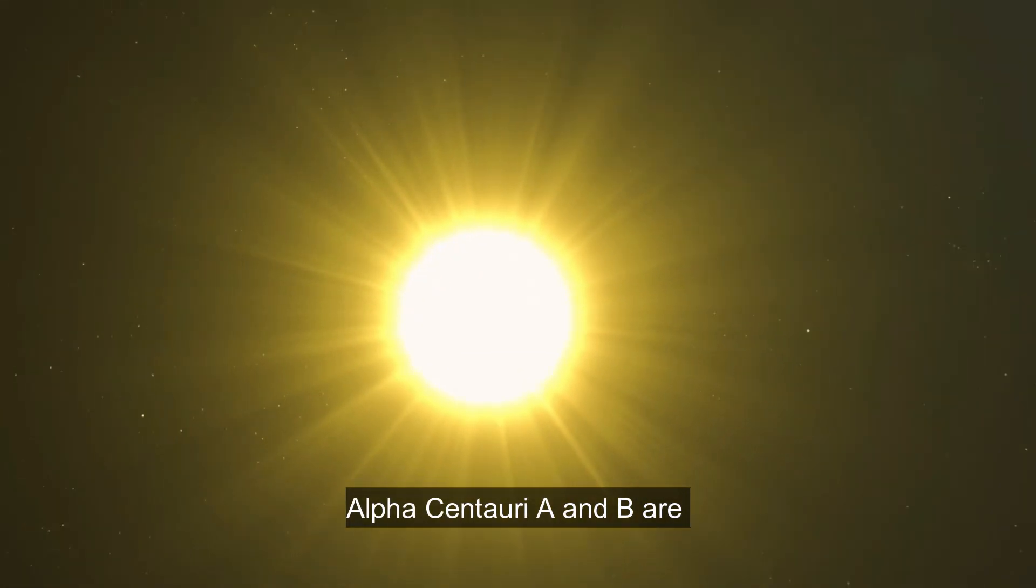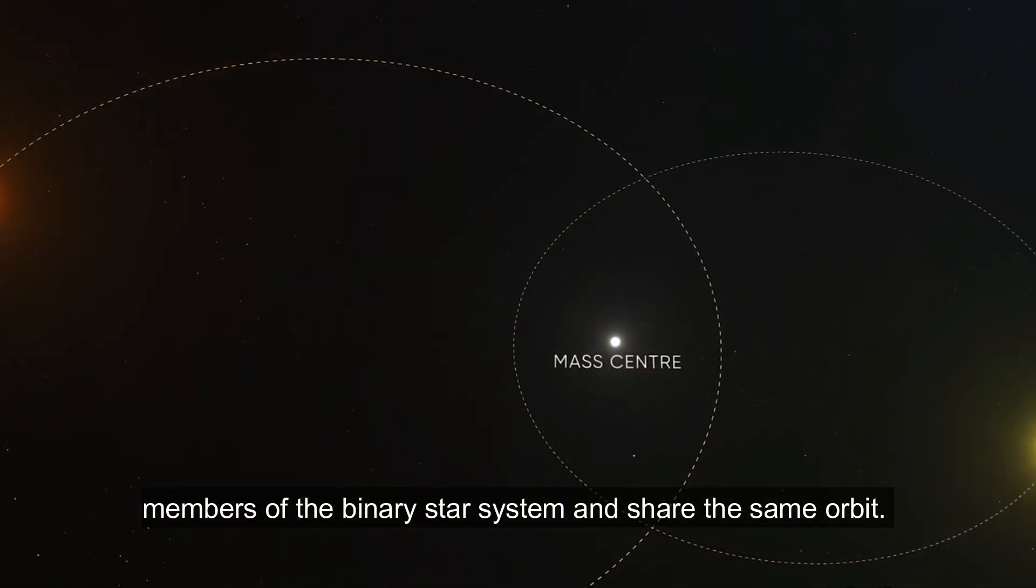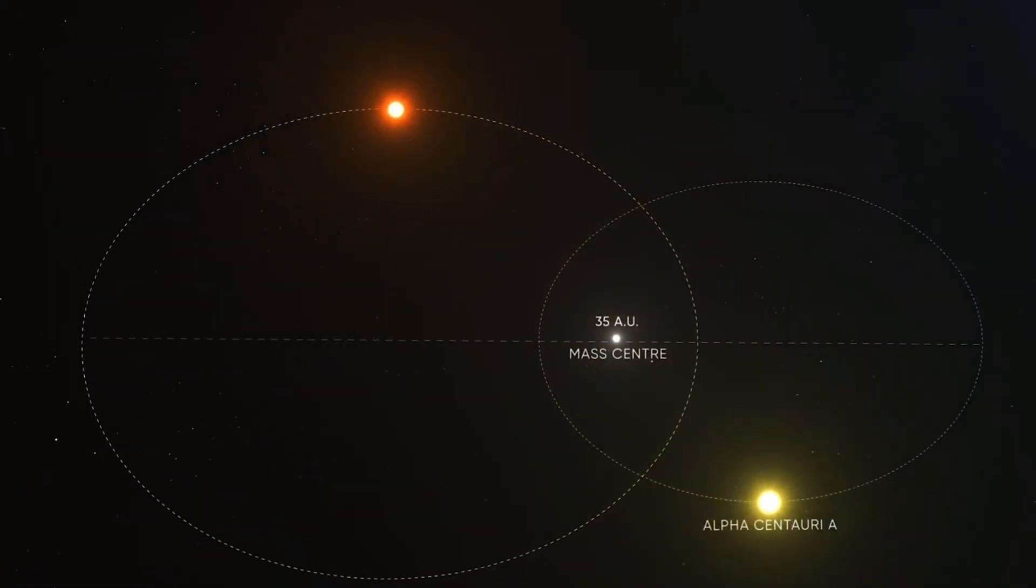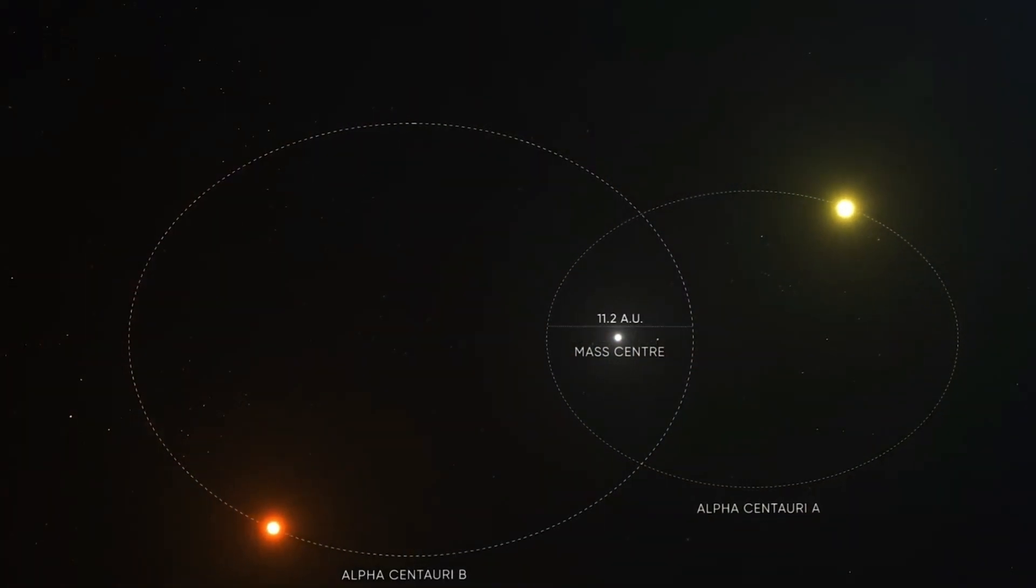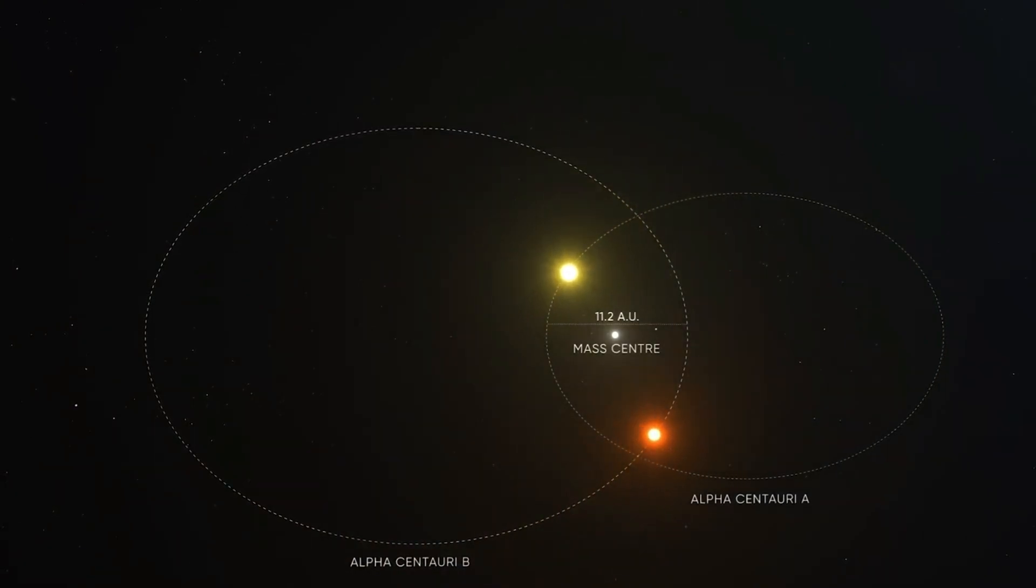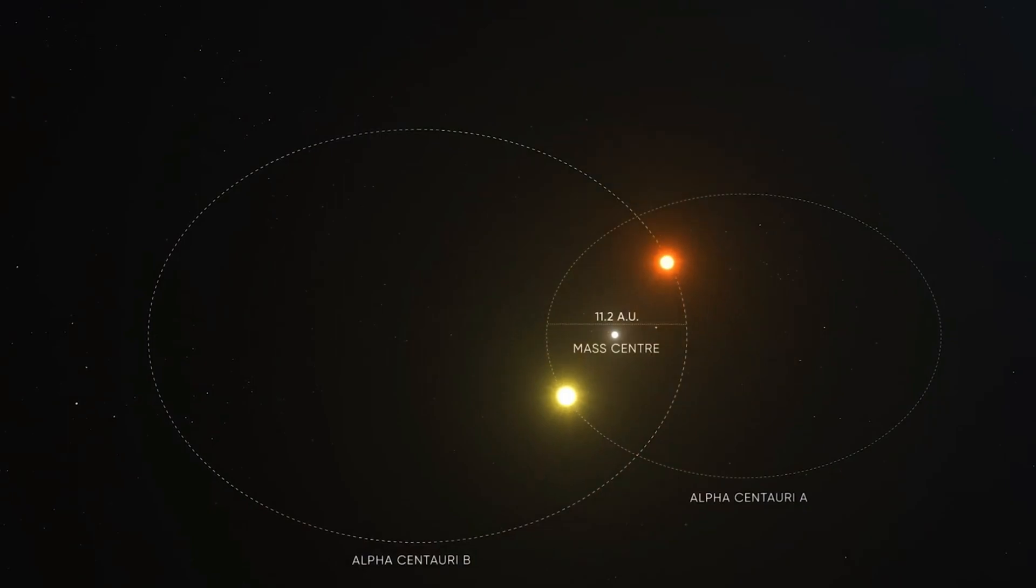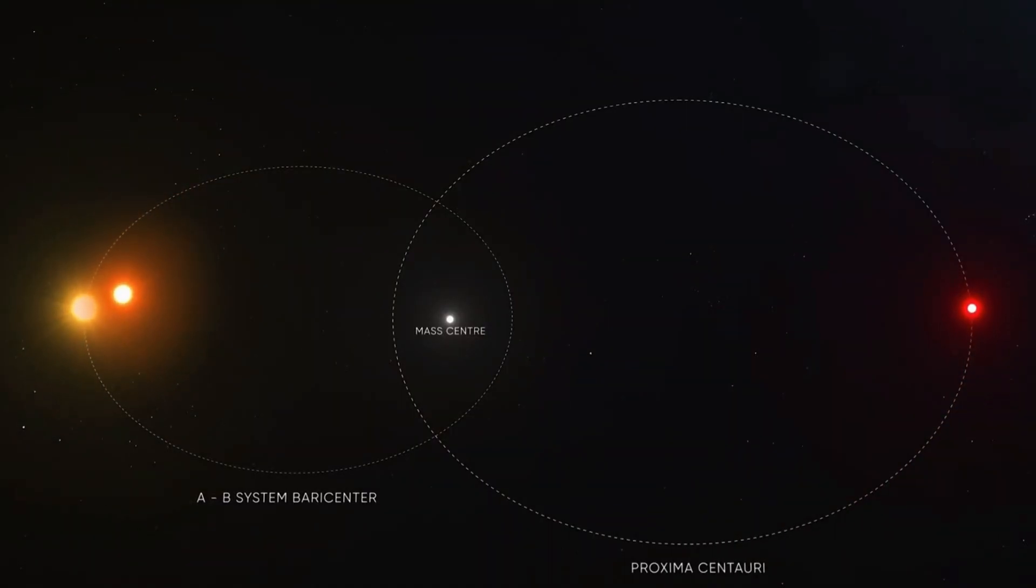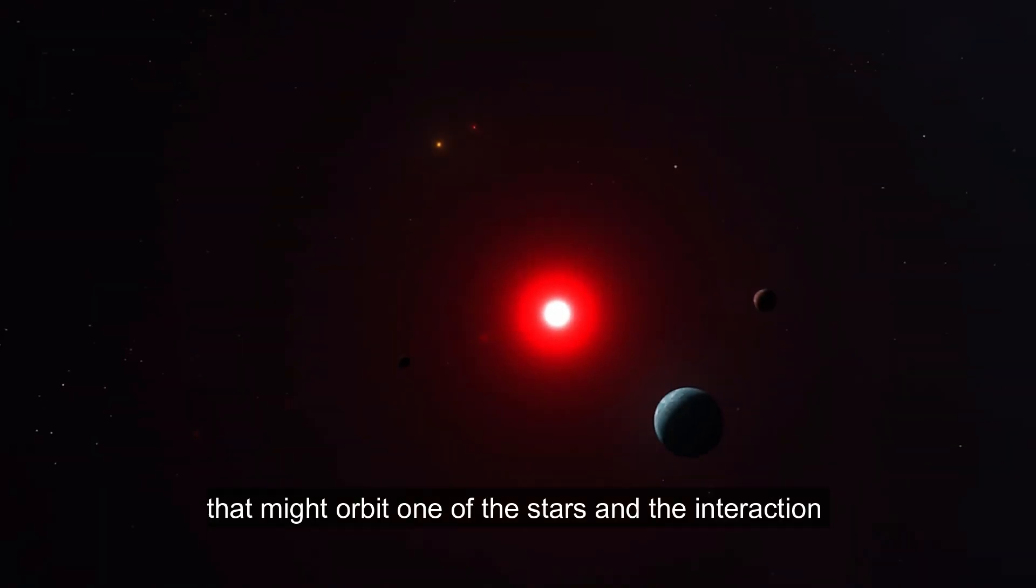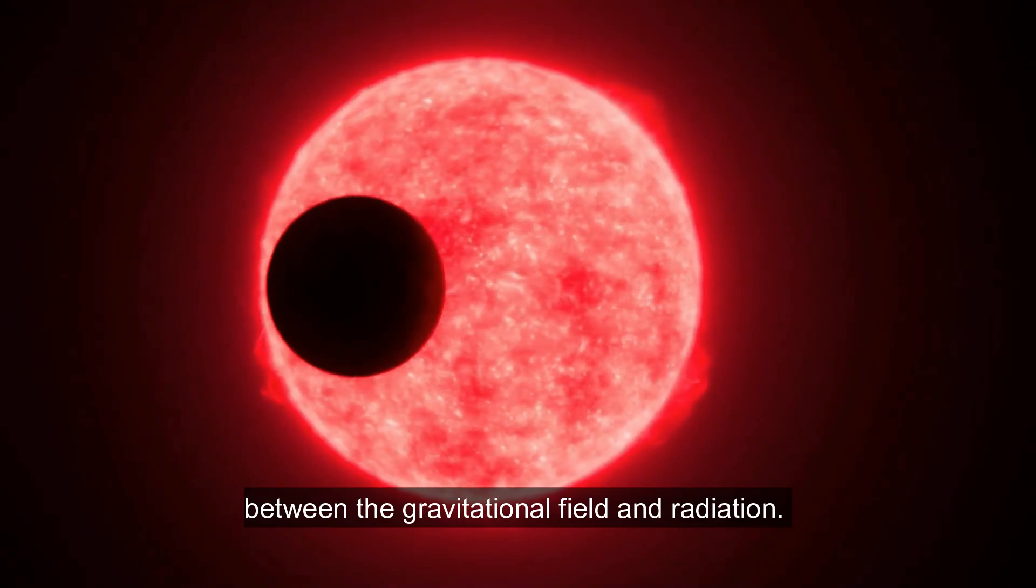Alpha Centauri A and B are members of the binary star system and share the same orbit. Despite the differences in their sizes and luminosities, their gravitational pull causes them to travel in a convoluted elliptical orbit. Both stars may become closer to one another during specific periods of their orbits due to these elliptical paths. This can affect several physical parameters, such as the temperature stability of a planet that might orbit one of the stars and the interaction between the gravitational field and radiation.